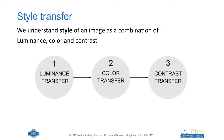What we understand as style consists of three characteristics of images: luminance, color, and contrast. Because of that, our method will have three stages: the luminance transfer, the color transfer, and the contrast transfer.